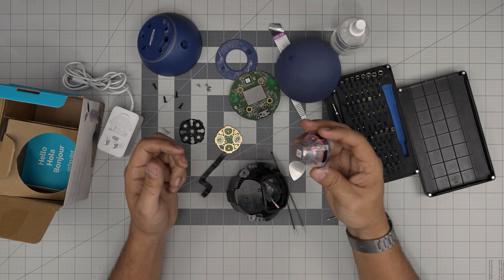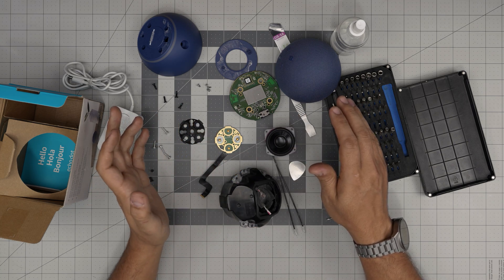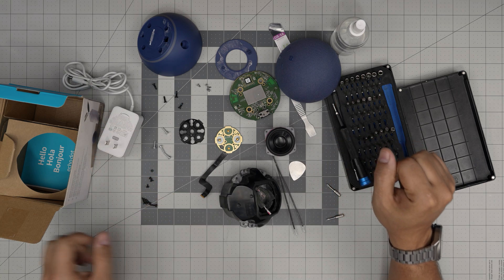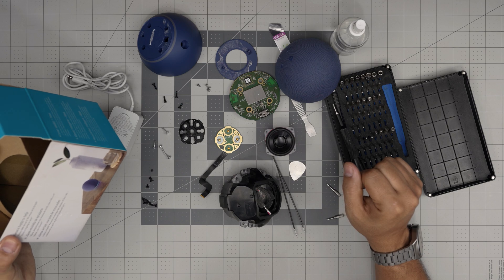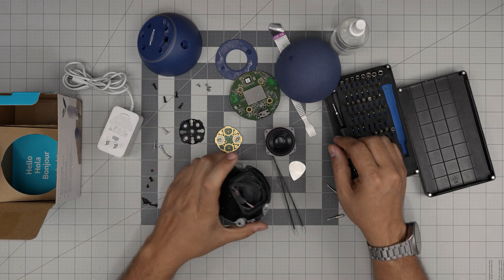So this is what's inside the Alexa Amazon Echo Dot fifth gen. I don't know anything else we can remove from here. Let's go ahead and put it back together and power it on.